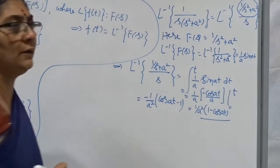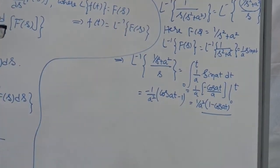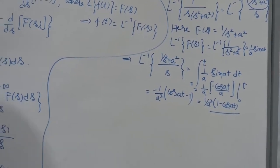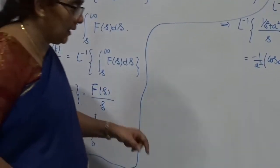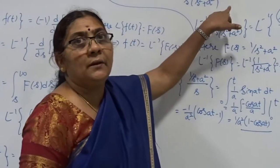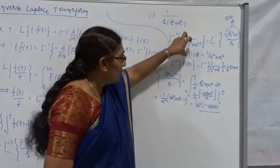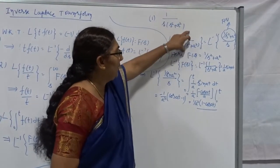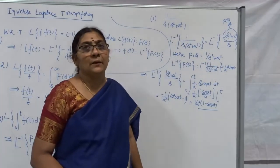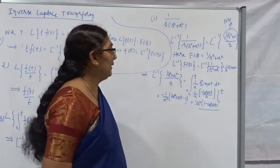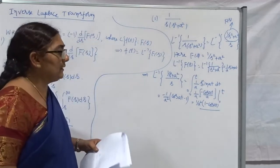This is the easiest way to find out the value. So there are many methods, but we adopted: L-inverse of F(s)/s equals the integral from 0 to t of f(t) dt. In this case it's possible to bifurcate s in the denominator from the numerator, and once you know the inverse of that value, we easily get the answer: 1/a² times (1 − cos at).